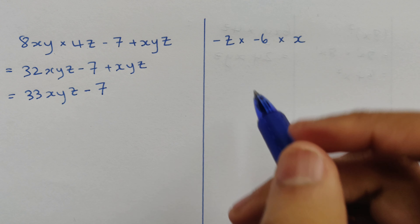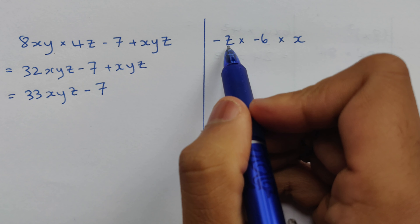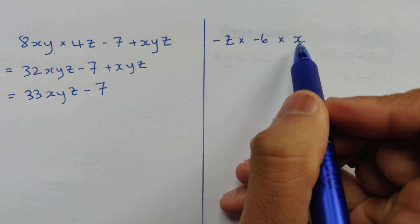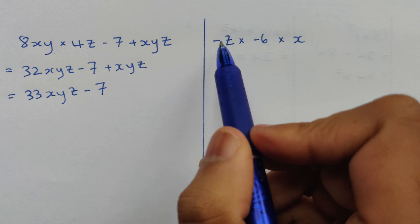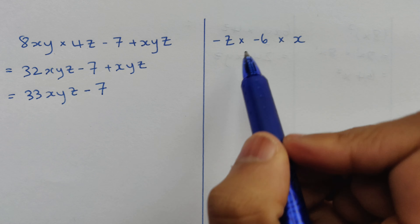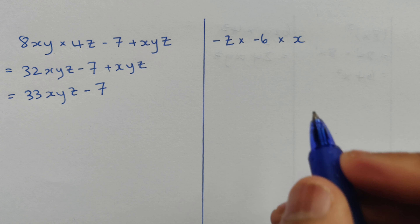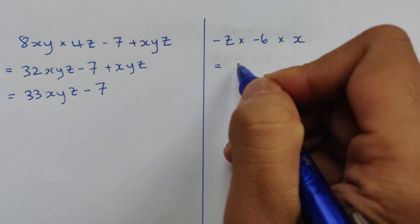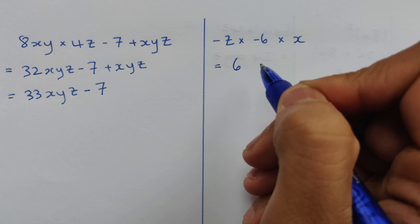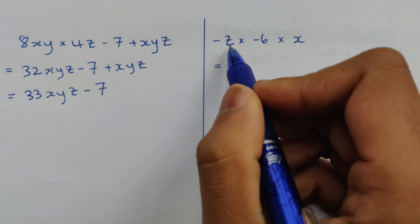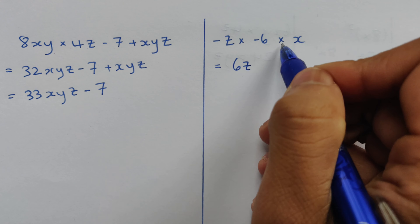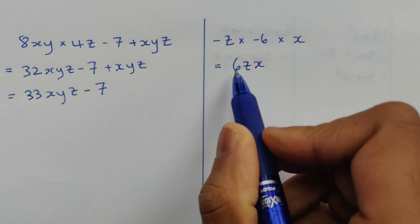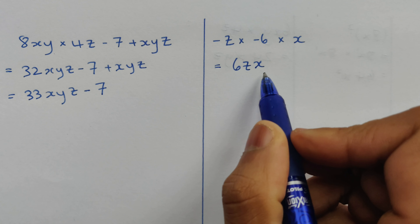Now let's look at minus z times minus 6 times x. We have a minus and a minus, so that becomes a positive. We get positive 6, and then multiplying by x gives us positive 6zx.